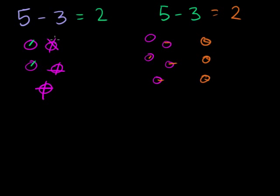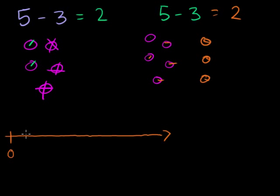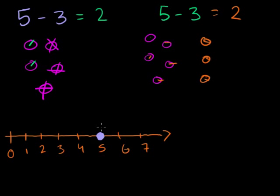We can also think about this from the number line point of view. Let me draw a number line. We've learned in the addition videos we can keep going forever, and we could even go to the left of 0 into negative numbers, which we'll see in future videos. Starting at 0: 1, 2, 3, 4, 5, up to 7. For 5 minus 3, we start at 5. Since we're subtracting 3, we decrease by 1, 2, 3, and we get to 2.